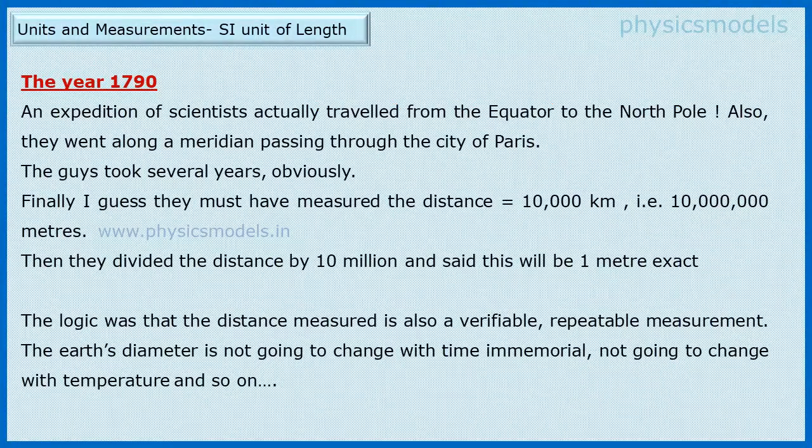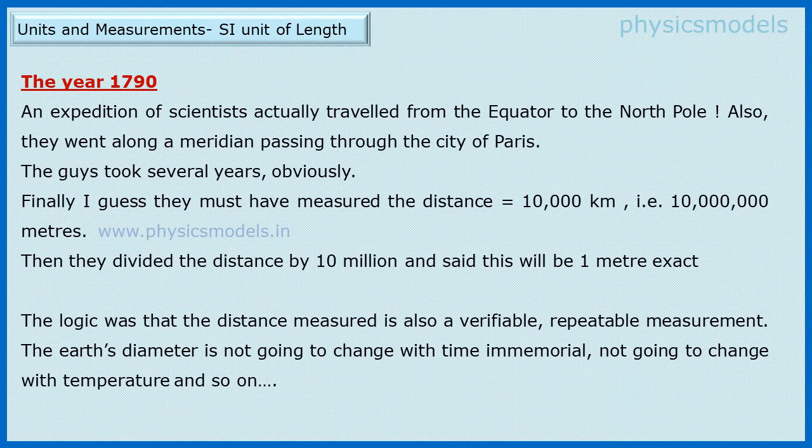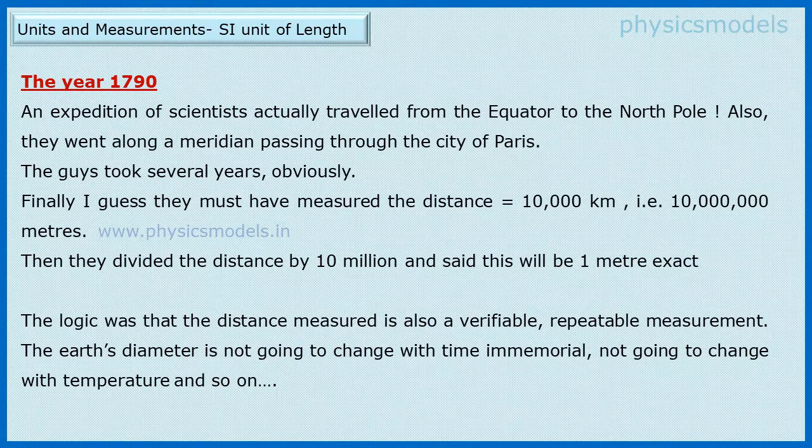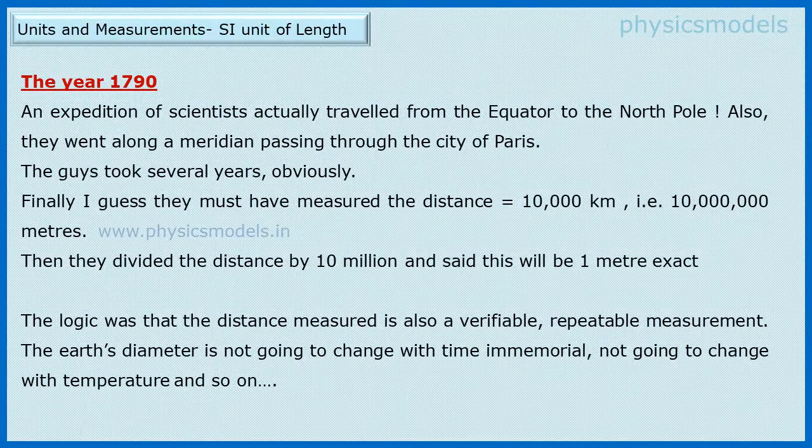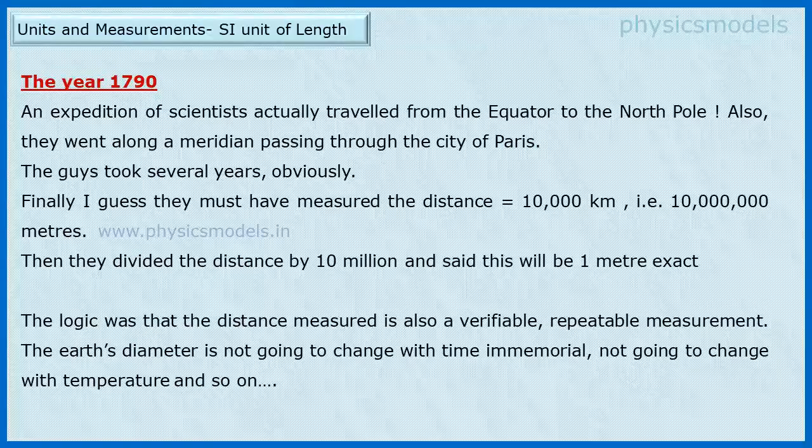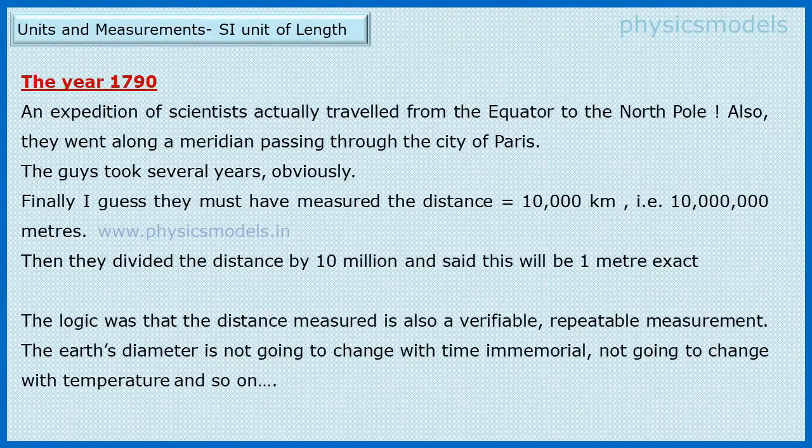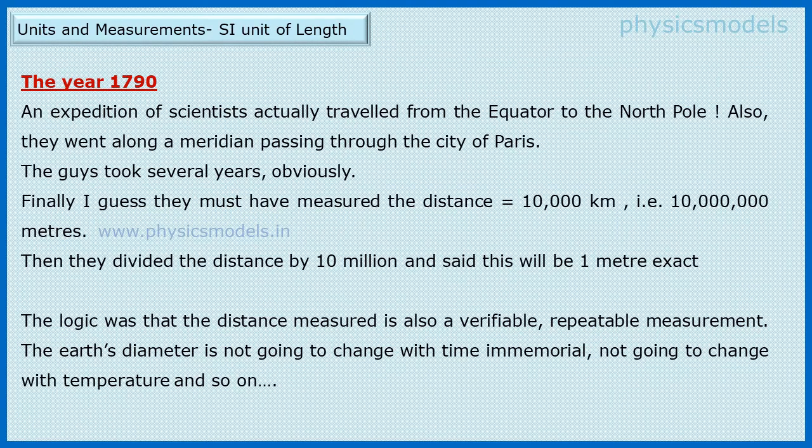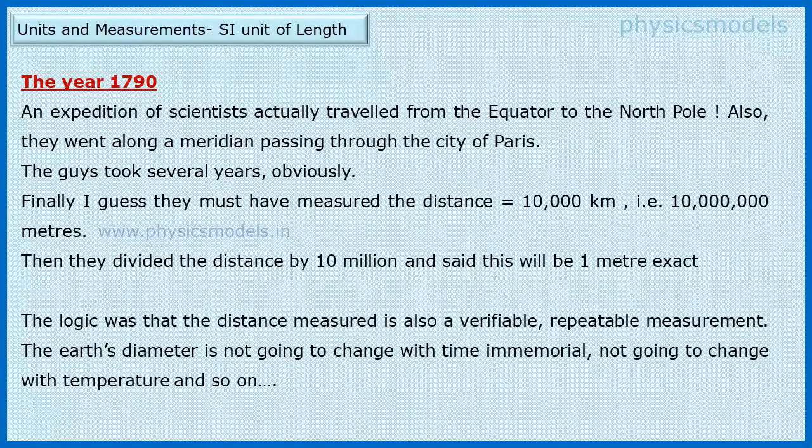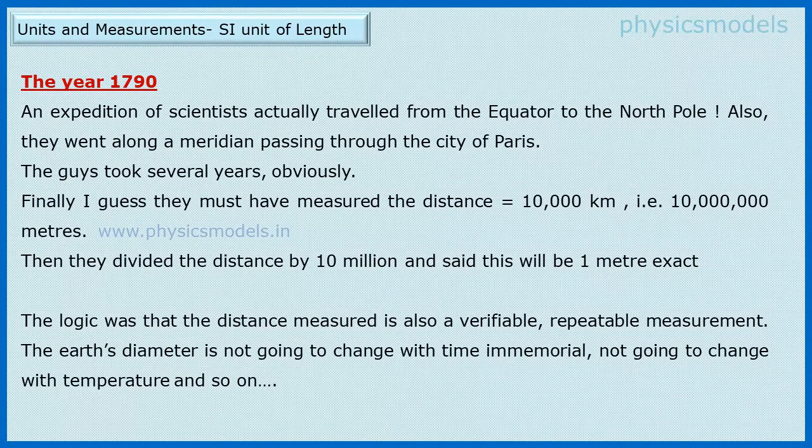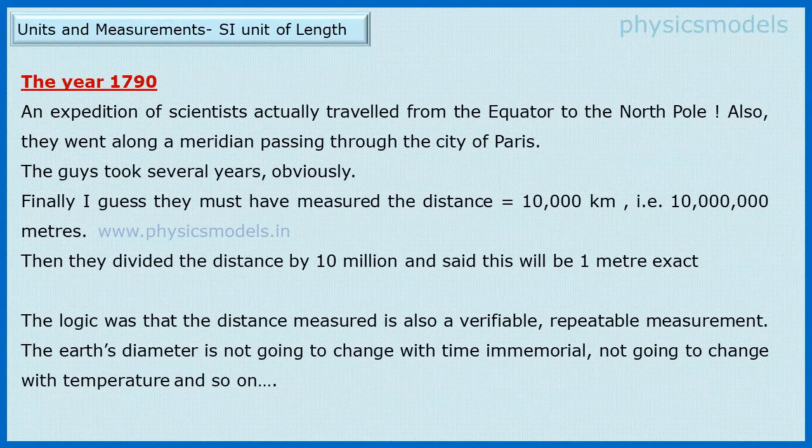The challenge before the scientists also was to define that 1 meter. So they decided to launch an expedition of scientists to physically travel from the exact equator to the center of the North Pole along an exact vertical line which is called meridian, and that meridian passed through the city of Paris. That expedition took several years obviously, and after measuring that distance they got 10,000 kilometers, which is 10 million meters because one kilometer is thousand meters.